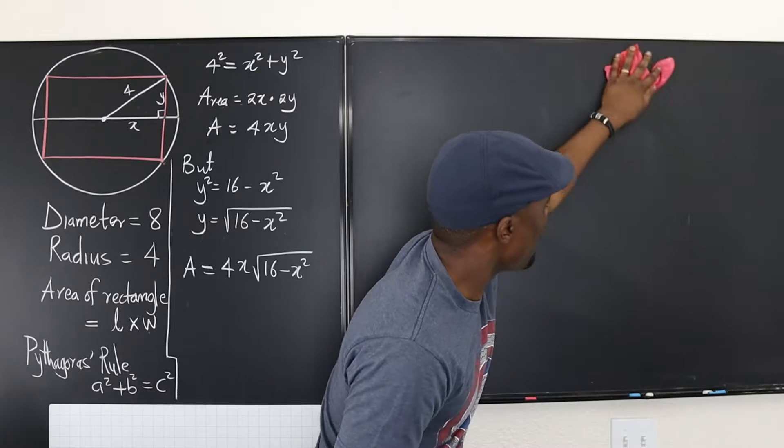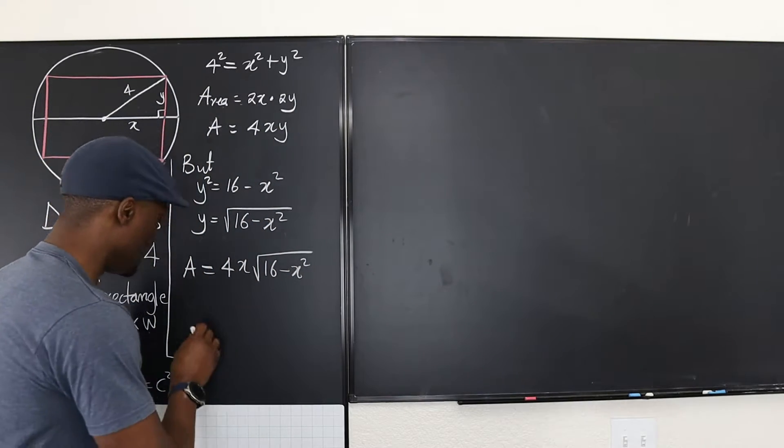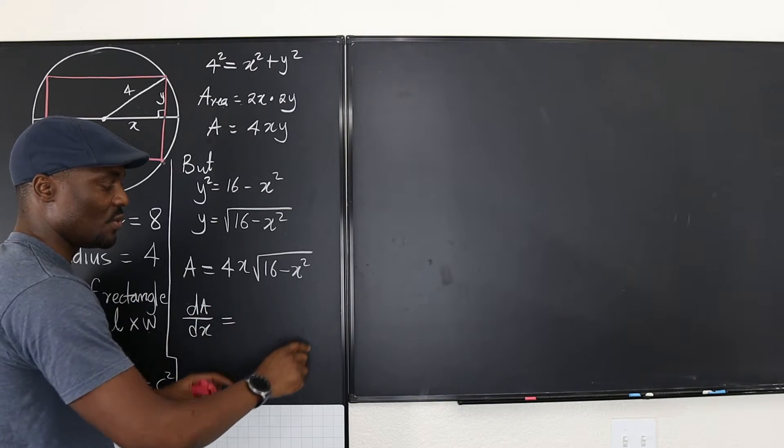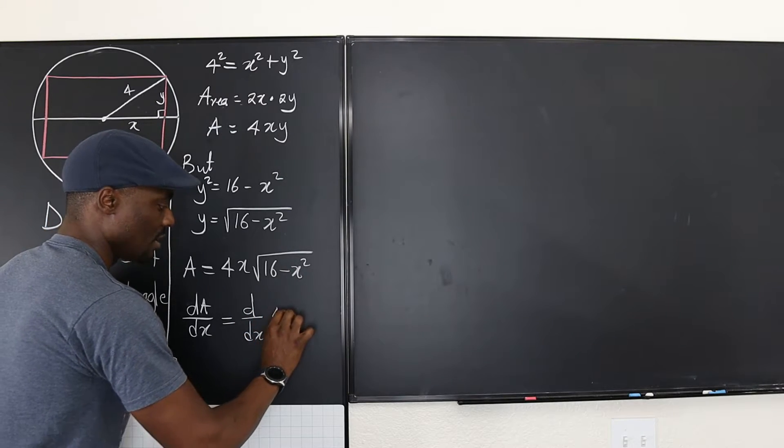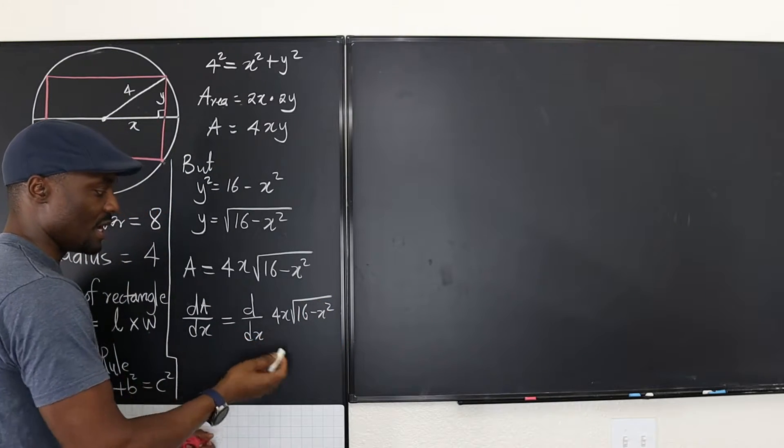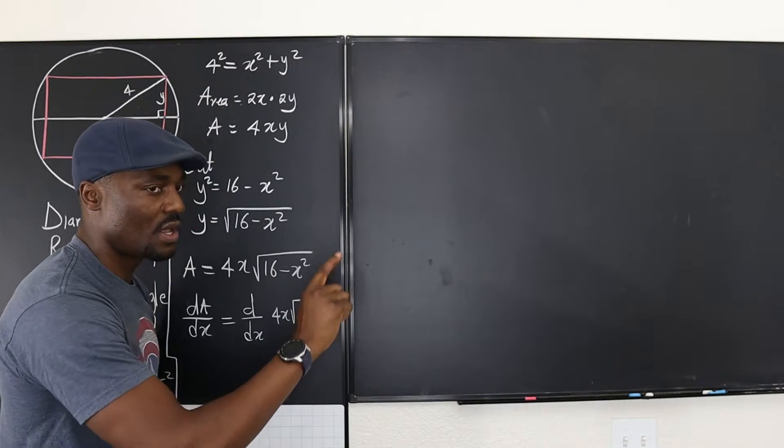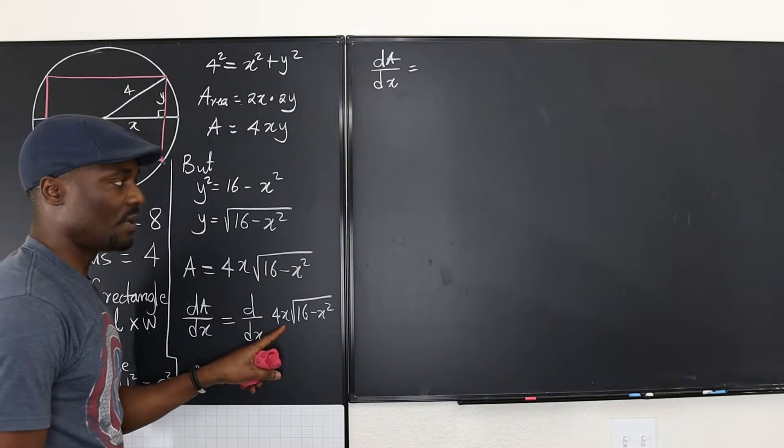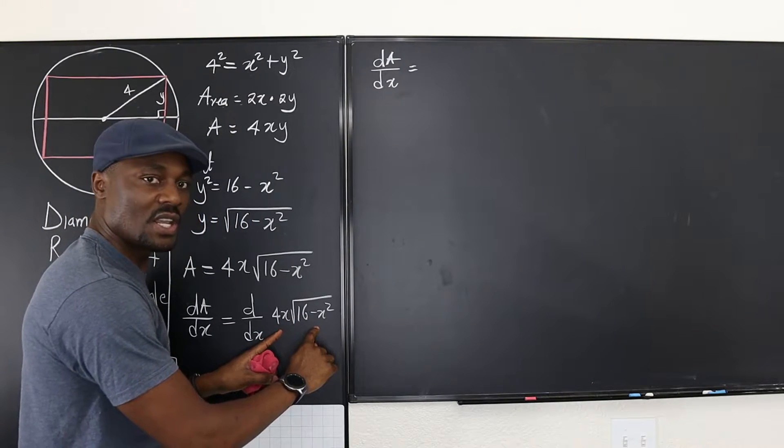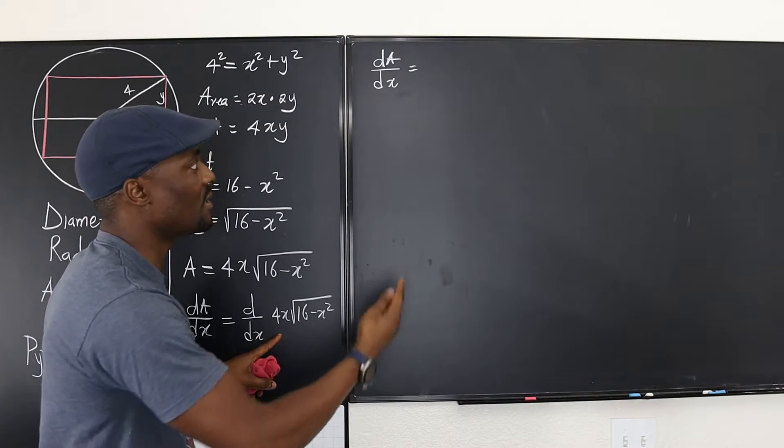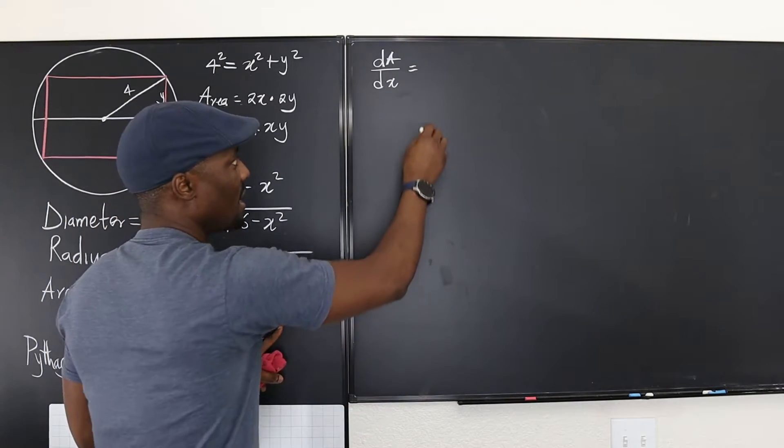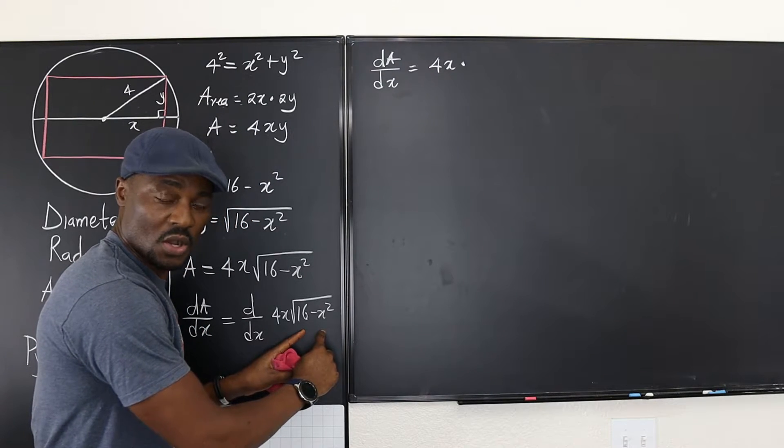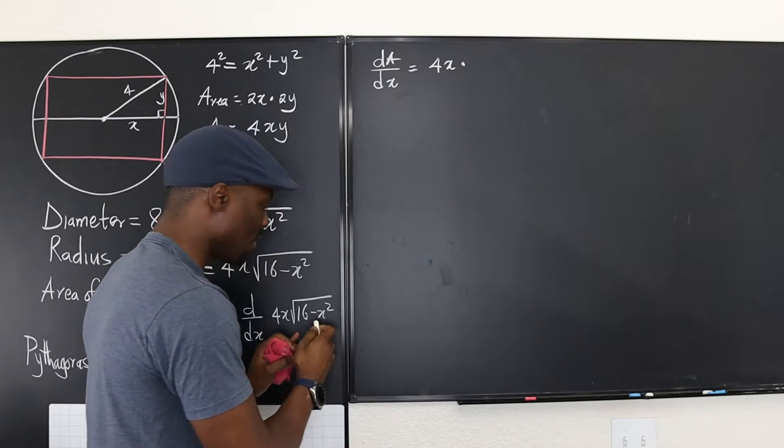So at this point, what we have to do is just differentiate this. So we're going to say that when we differentiate dA/dx, if we differentiate dA/dx, it's going to be the d/dx of 4x square root of 16 minus x squared. That's what we're going to get. So we're going to differentiate this. And because this is one function multiplying another function, we have to bring in the product rule.